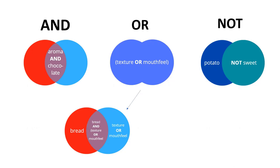NOT is quite a drastic Boolean operator. With NOT, you remove all results that have a particular word in them. For example, you might search potato NOT sweet. The problem is you don't see what you're missing — you don't know if researchers used the term 'sweet' in a way you hadn't anticipated. It's something to use with great caution, and I tend to use it mainly as a diagnostic tool rather than in building a search.